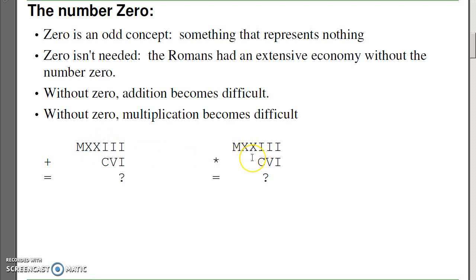Multiplication is even harder. The Romans could do it. They had a very elaborate commerce system. You can multiply and divide, add subtract, without the number zero. With the number zero, it makes life much, much easier.